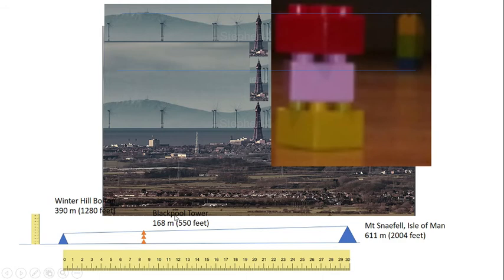In conclusion, my conclusion in my last video that you need about three Blackpool Towers in order for the line of sight from Winter Hill to reach Mount Snaefell was proven correct using an experiment.